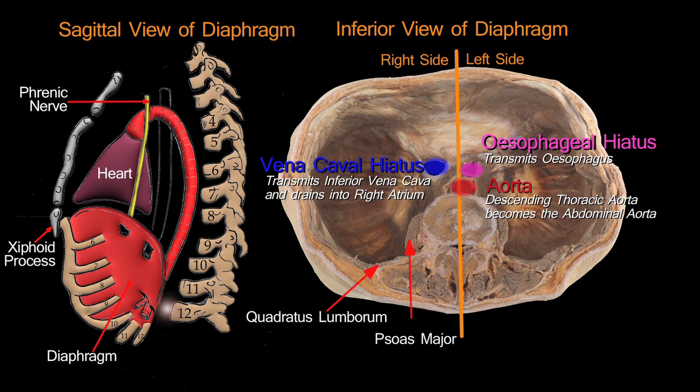At a slightly higher level — approximately the tenth thoracic vertebral body — is the esophageal hiatus. The highest of the three major openings is the vena caval hiatus, which is to the right of the midline, at the level of approximately the ninth thoracic vertebral body.